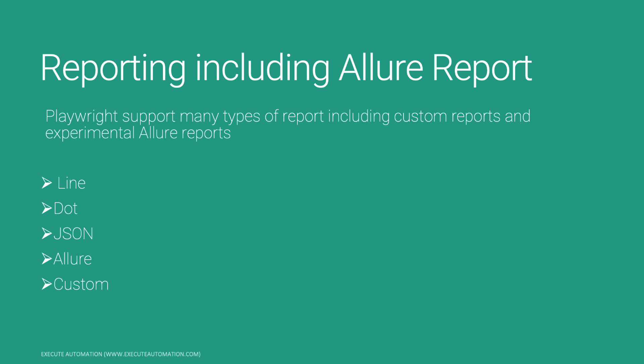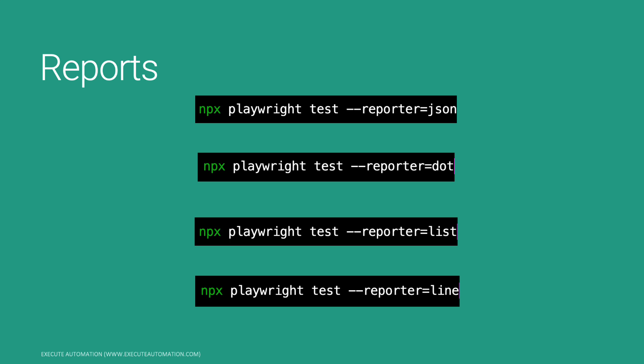The reporting in Playwright Test is very easy to set up. You can either set it in the Playwright configuration or on the command line. For example, you can specify `npx playwright test --reporter=json` to generate a JSON report. If you specify dot, it's going to put dots for all the tests running and show the report on the console. These things are very helpful when running tests in a CI/CD pipeline. Same for list and line - the default is list, which shows ticks for passing tests.